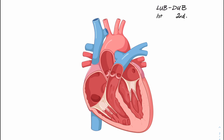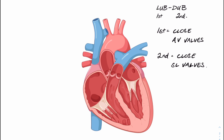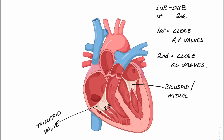Before we talk about abnormal heart sounds, I think we should first understand the normal heart sounds. The normal heart sounds are lub and dub, called the first and second heart sound respectively. The lub, the first heart sound, is caused by the closure of the atrioventricular valves, and the second heart sound is caused by the closure of the semilunar valves. The atrioventricular valves sit between the atria and the ventricles — on the right we have the tricuspid, and on the left we have the mitral.